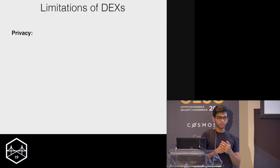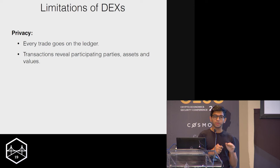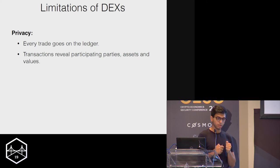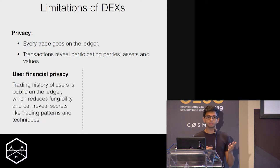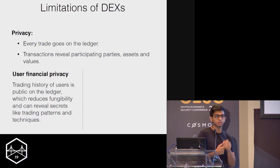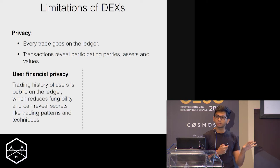Focusing on the privacy drawback: in a decentralized exchange, every trade goes on the ledger, which reveals information about the parties transacting, the asset pairs being traded, and their values. This privacy leakage has two effects. At the individual user level, trading history is publicly visible on the ledger — this harms fungibility and can leak information about a user's proprietary trading patterns. The leakage also has ramifications on the global security of the system, via something called front running.